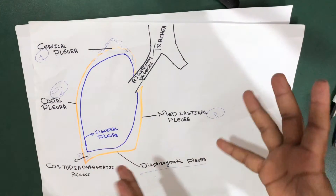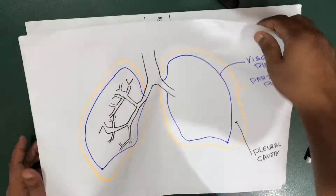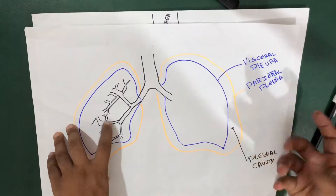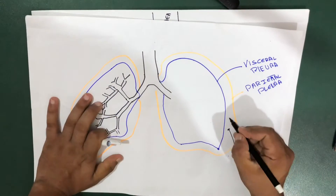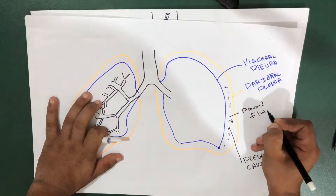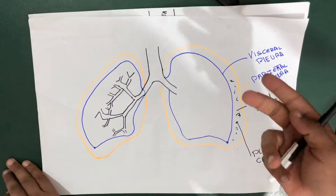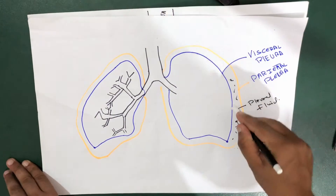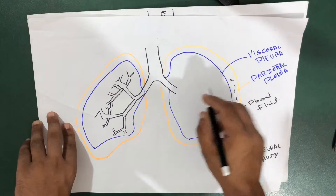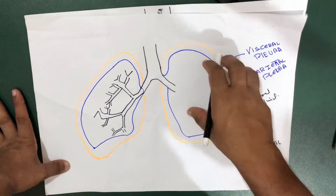Pleural effusion is also called 'water on lungs.' In normal conditions, the pleural cavity contains pleural fluid — about one to two teaspoons — which reduces friction. When there is an excessive collection of fluid in the pleural cavity beyond this normal amount, that is called pleural effusion.